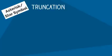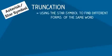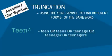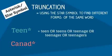Truncation involves the use of the star symbol or asterisk. This symbol comes at the end of your root word and is helpful if you're using a concept that might have different endings. For example, by using the star symbol at the end of the word teen, you would get results for teen, teens, teenage, teenager, or teenagers without having to type in all of these words separately. You could even use it for a word like Canada by dropping the A.